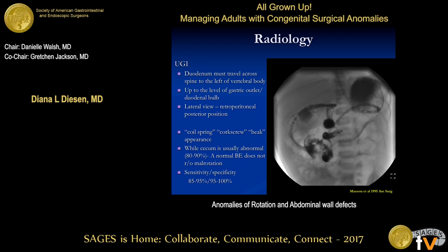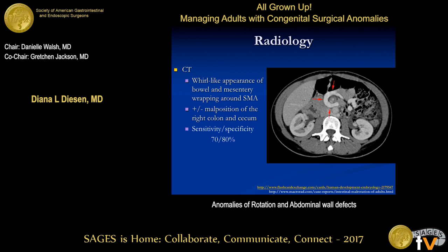The gold standard for diagnosis of malrotation is an upper GI. The duodenum should cross the spine to the left of the vertebral body and go up to the level of the gastric outlet and duodenal bulb. On the lateral view, you should see a retroperitoneal portion. If you do not have this, you are not normally rotated. If you have a volvulus, you're likely to see a coil spring, corkscrew, or beaking appearance. The cecum is usually in an abnormal location, but 10 to 20% of the time the cecum may be in a normal location — so a normal barium enema does not rule out malrotation. The sensitivity and specificity is highest for upper GI. CT and ultrasound can also be used, but the sensitivity and specificity is lower, so an upper GI is usually recommended to confirm the diagnosis.